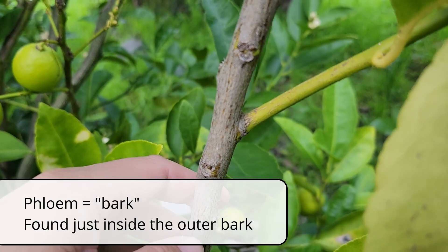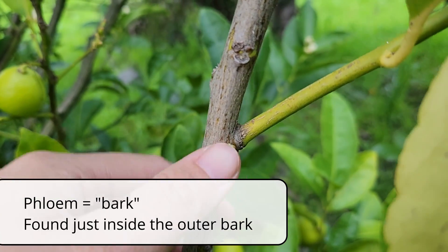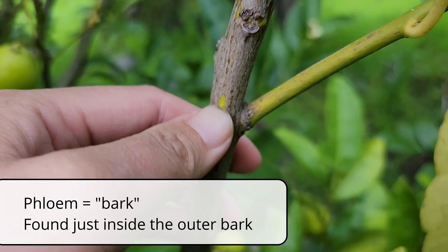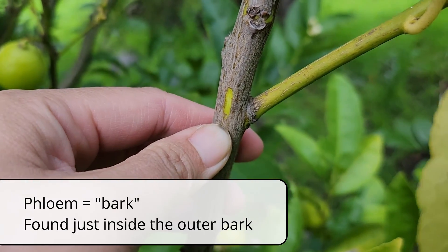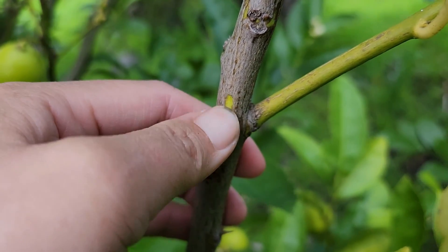The term phloem means bark in Greek. It's the innermost layer of the bark, so it's just under the surface of the tree trunk.